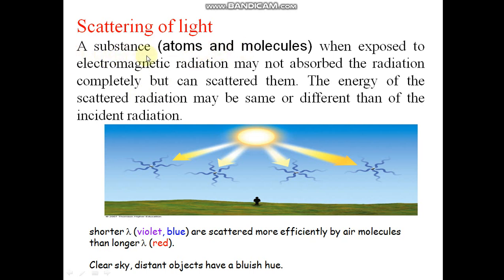Scattering of light. A substance, atom and molecule when exposed to electromagnetic radiation may not absorb the radiation completely but can scatter them. The energy of the scattered radiation may be the same or different than the incident radiation. Shorter lambda are scattered more efficiently by air molecules than longer lambda. This is why the sky's color is blue.